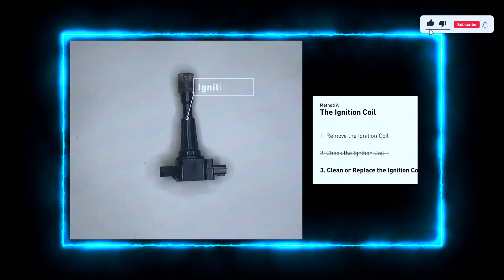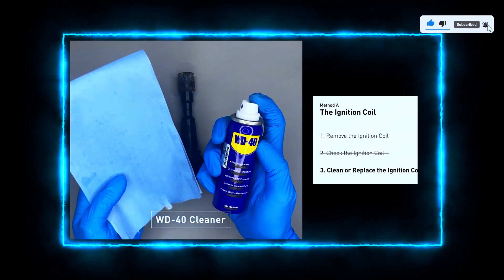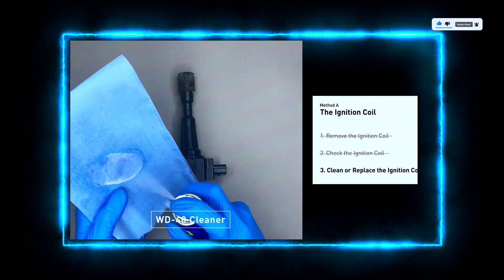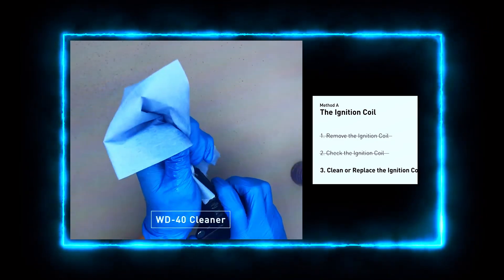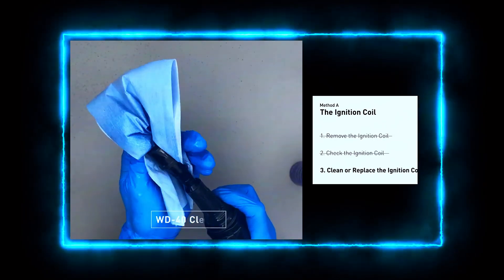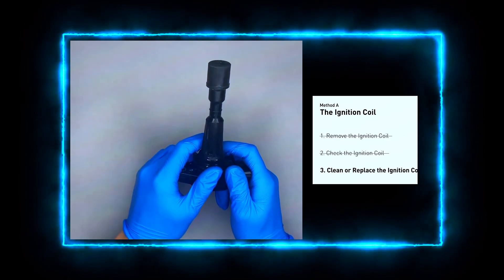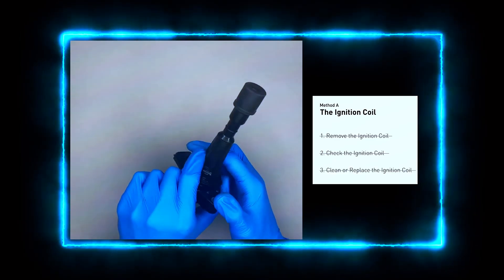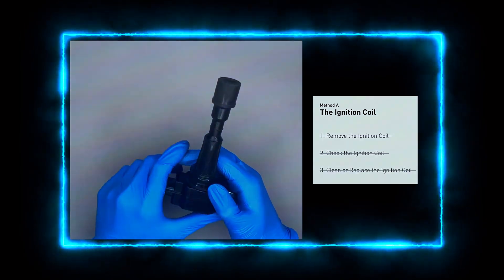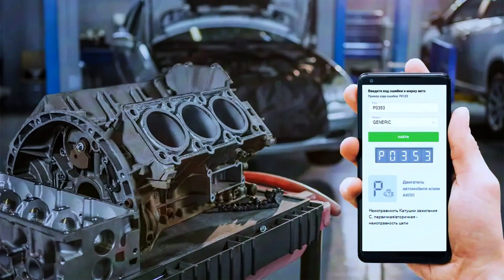If your coil is bad, replacing it is straightforward. Remove the bolts holding the coil in place. Swap in the new coil and re-attach the wiring harness. Make sure to apply a bit of dielectric grease to the connector to protect it from moisture and corrosion. Once the new coil is installed, plug the OBD2 scanner back in and clear the P0353 code.